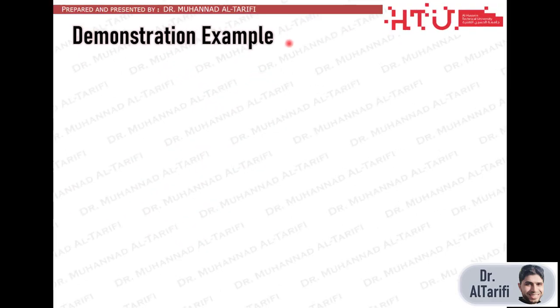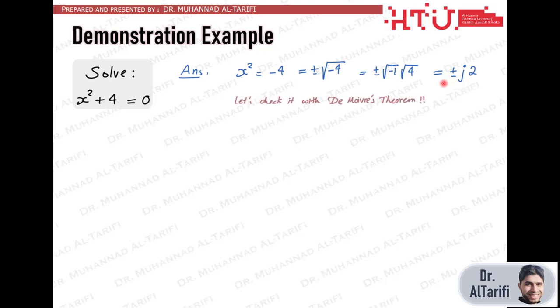Let's go through a simple example in detail. We want to find all solutions of x squared plus 4 equals 0. We know that the solutions should satisfy x squared equals minus 4 which are plus minus square root of minus 4 or plus minus j2. But let's see if we can obtain the same solutions when we follow the De Moivre's theorem.